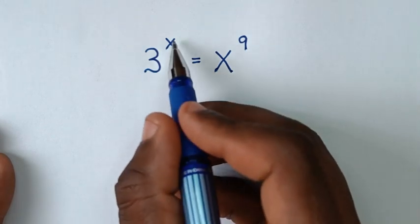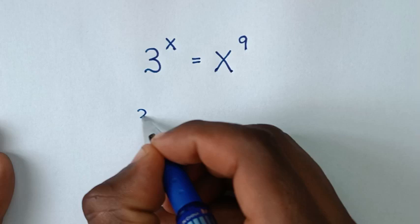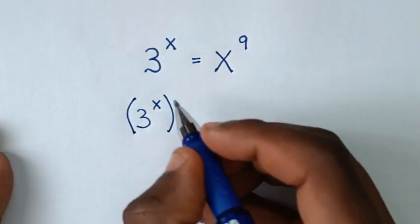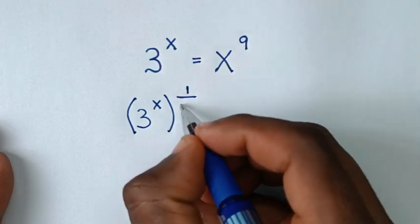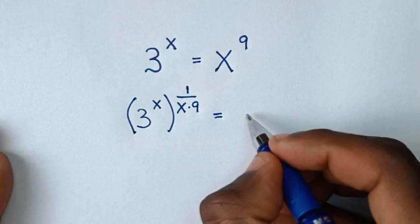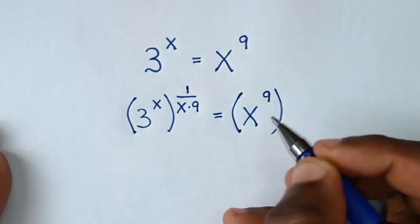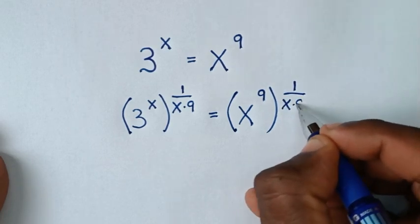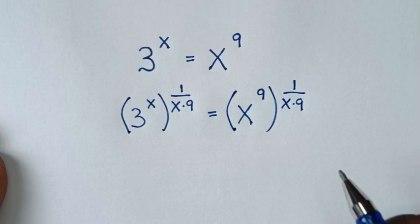From the powers, we have this power of x and this power of 9. So from this side it will be 3^x, then in brackets we multiply by the power of 1 over (x times 9). So x times 9 equals this side, which is x^9, then in brackets we multiply by the power of 1 over (x times 9). We multiply by this power on both sides.